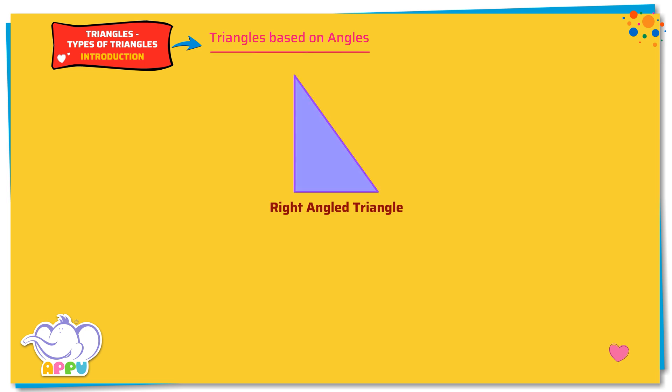Right angled triangle. A right angled triangle is a triangle that has one angle equal to 90 degrees.